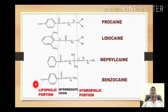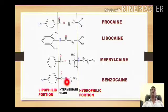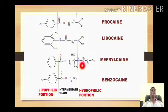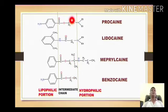The first portion is the lipophilic portion — that means the portion which is soluble in lipid or fat and is non-polar. The second portion is the intermediate chain, which is a carbon chain between functional groups like the carbonyl group, the oxygen or the NH group, and the tertiary amino group. The carbon chain between the carbonyl and the nitrogen is one carbon, and between the oxygen and nitrogen is a two-carbon chain. This carbon chain is called the intermediate chain.